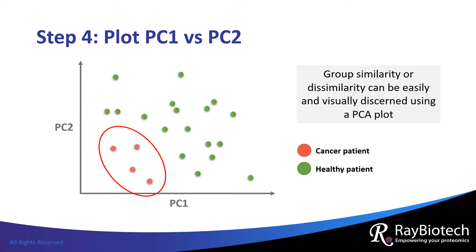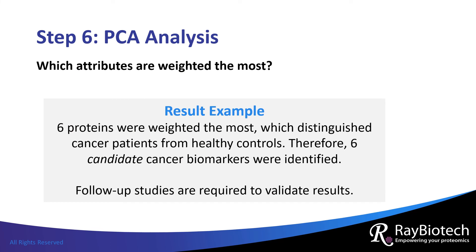Now that we know that there are some proteins that cause the cancer group to cluster separately from the healthy group, the next question is: which proteins or attributes were weighted the most to get these results? In the final step, we find out which attributes were weighted the most by looking at a generated table or a rotation plot. In other words, we find out which attributes were identified by the PCA analysis to cause the largest spread in data. In this example, six proteins in the blood were weighted the most and enabled cancer patients to be distinguished from healthy controls. These proteins would be considered cancer biomarkers. Follow-up analyses may then be performed to validate such results.